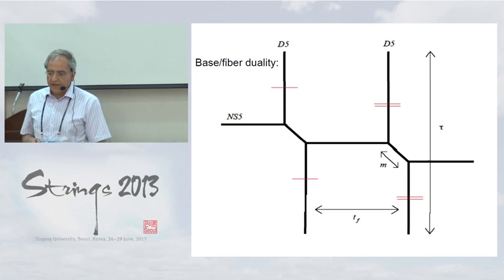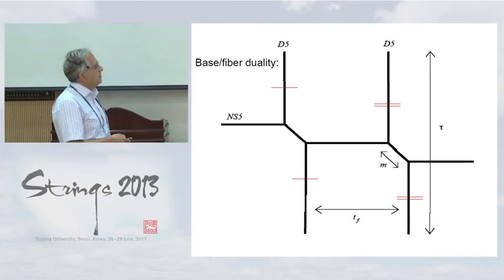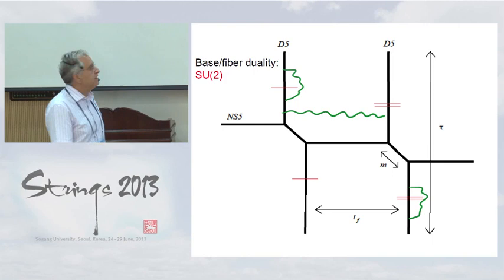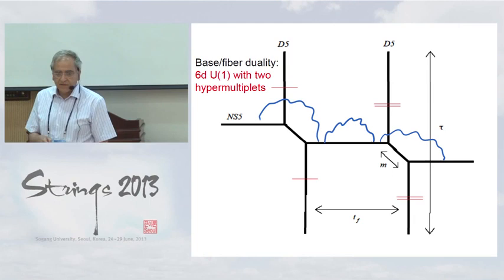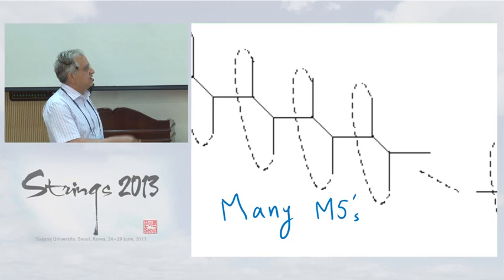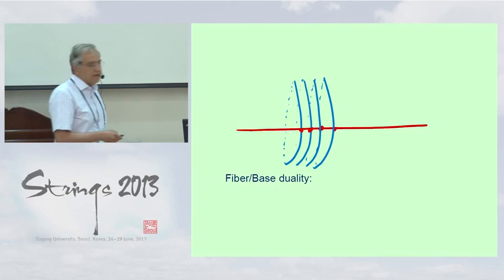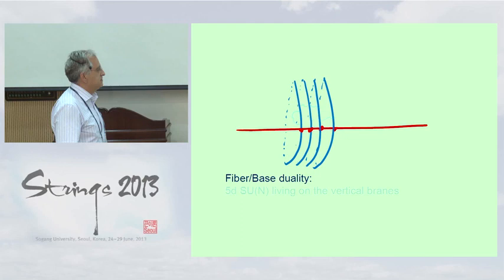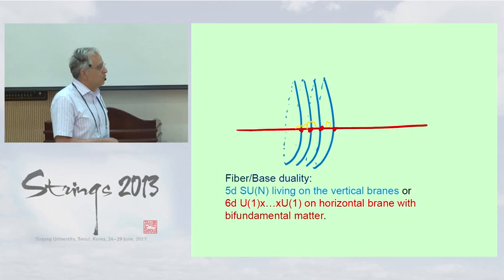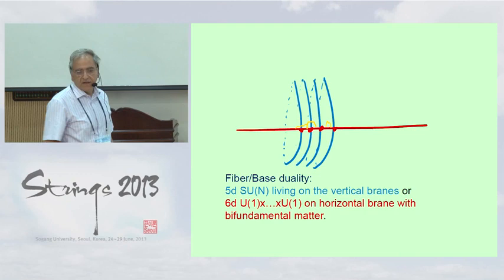There is a fiber-base duality which turns out to be crucial. From this picture we can think about this as an SU(2) gauge theory in the usual way, but there is another way to think about it: as a U(1) theory with two fundamental hypermultiplets with some extra periodic condition, which is related to interpreting this theory as a 6d theory with U(1) and hypermultiplets. The same geometry has two dual descriptions. For any number of M5 branes the fiber-base duality gives two interpretations: either SU(N) — more precisely U(N) — living on the vertical branes, or U(1)^{N−1} with bifundamental matter.